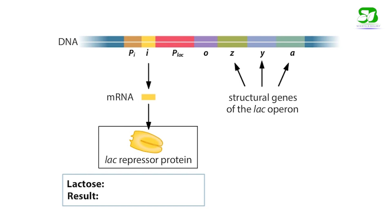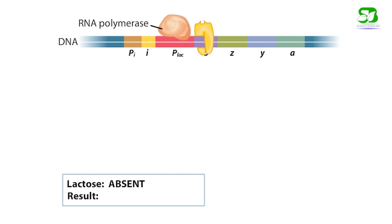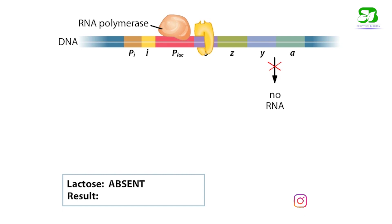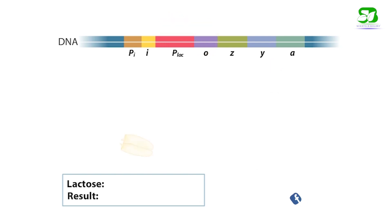The lac repressor protein encoded by the lacI gene is always expressed, whether lactose is present or not. In the absence of lactose, the lac repressor binds to the lac operator sites. The repressor binding to the operator physically blocks the progression of RNA polymerase. Since RNA polymerase is unable to transcribe the lac structural genes, the corresponding proteins are not made.